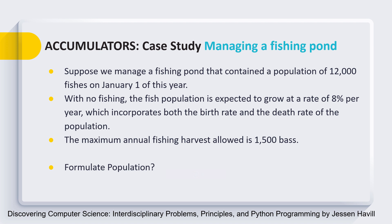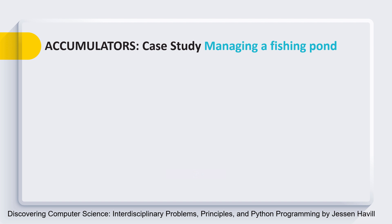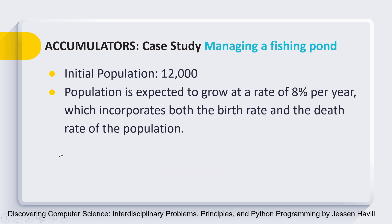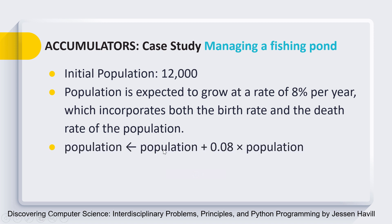You can pause the video at this point and take your time to formulate this population formula. I hope you are ready with your formula. Let's decode it. Since the initial population is 12,000 and the population is expected to grow at 8% per year, we can use an accumulated variable as discussed in our previous session.